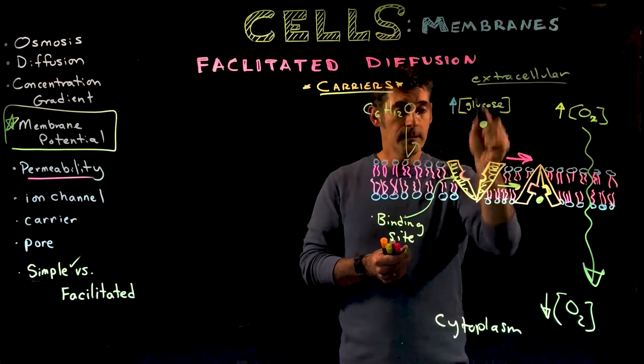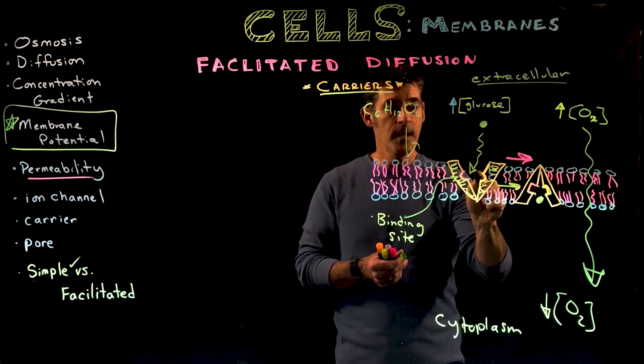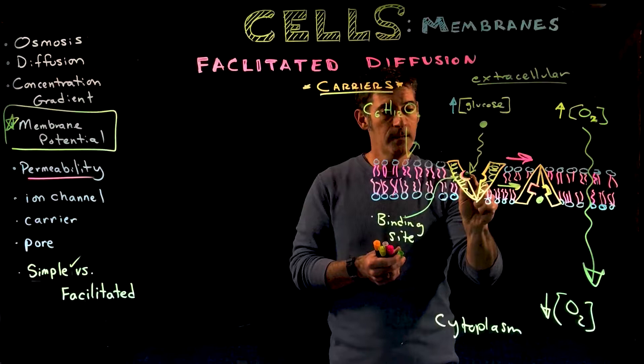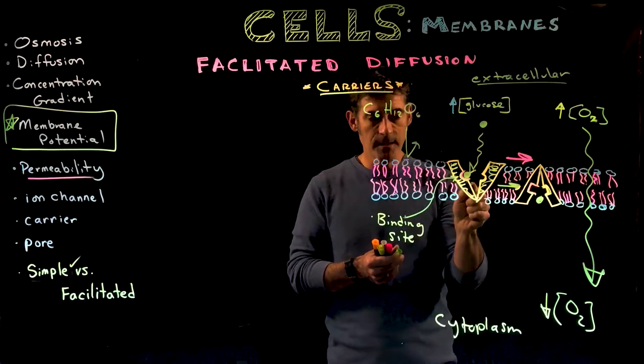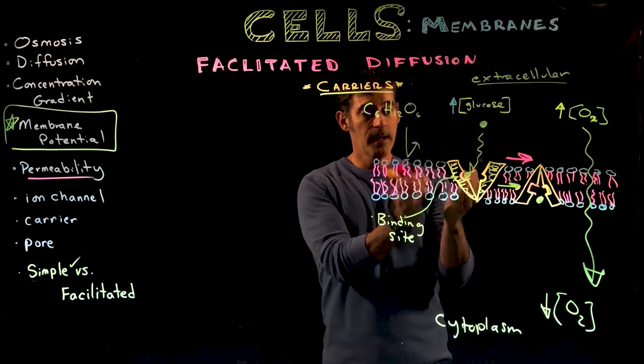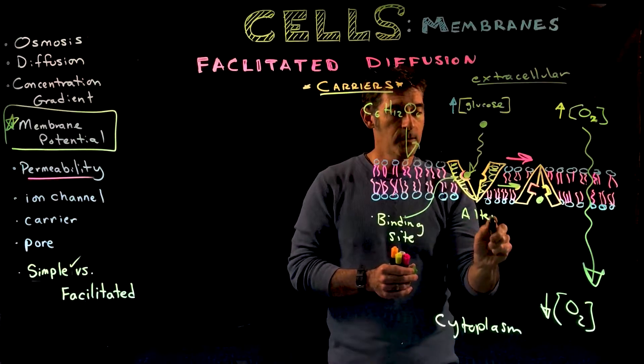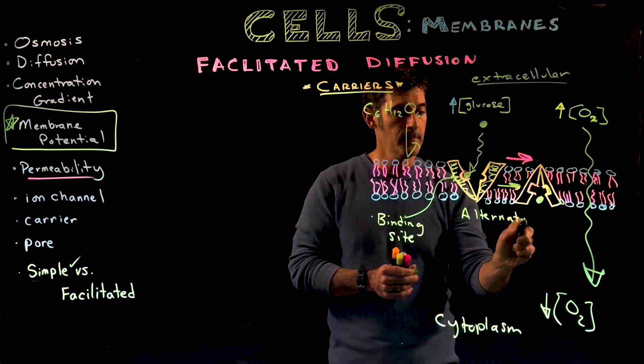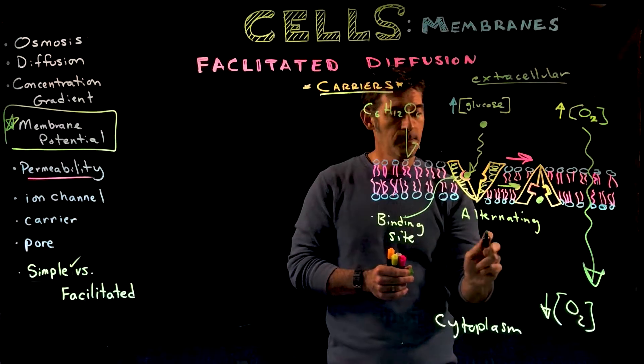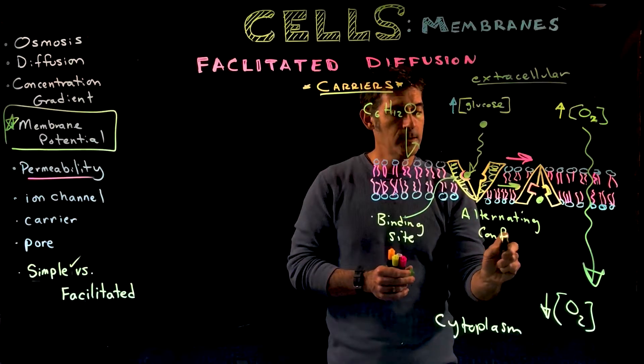A glucose molecule in an area of high concentration moves into the carrier protein. It binds to the binding site, and that triggers the carrier to change shape. We call that alternating conformation. Alternating means change, and conformation means shape.